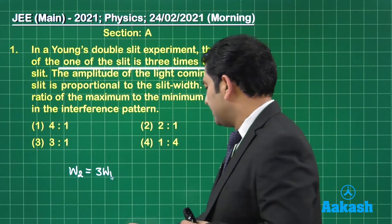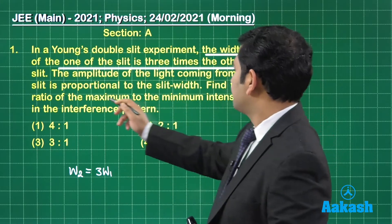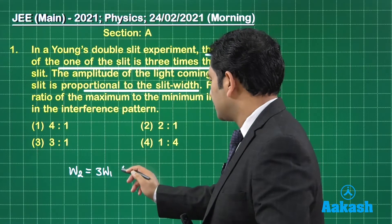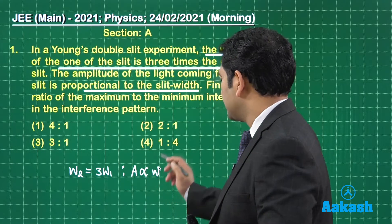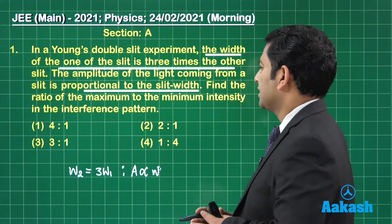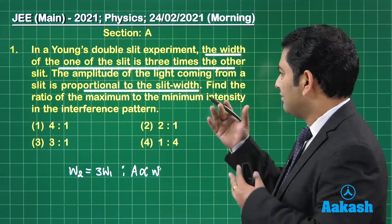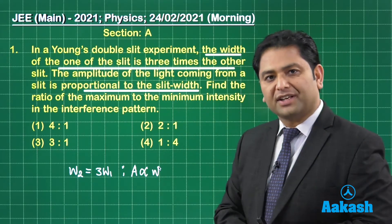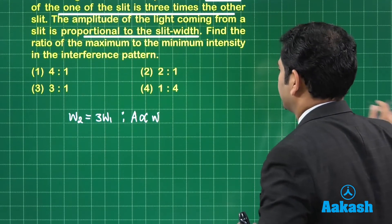And together the sentence also says that the amplitude is proportional to the slit width. So that has been given that amplitude is directly proportional to the slit width. We got to calculate the ratio of maximum to minimum intensity in this interference pattern. So it's almost a very straightforward question.